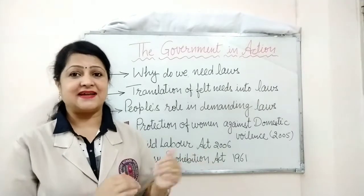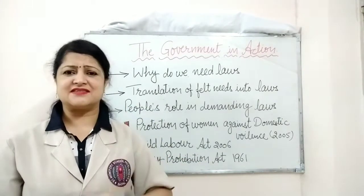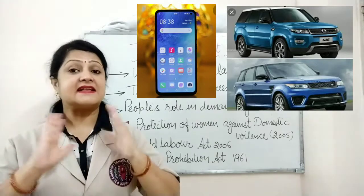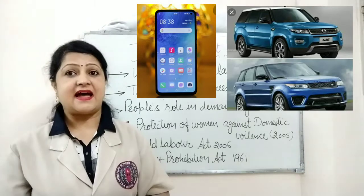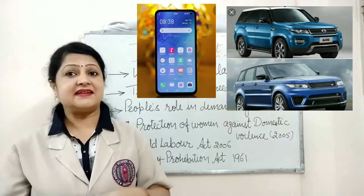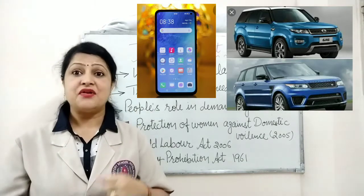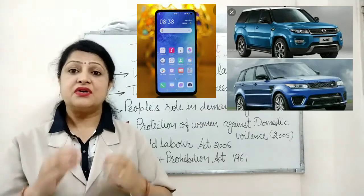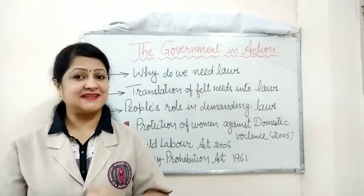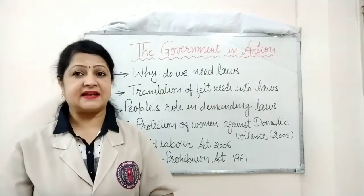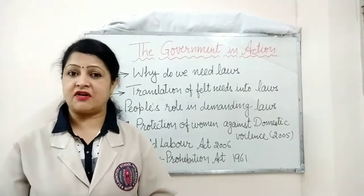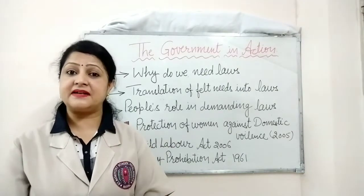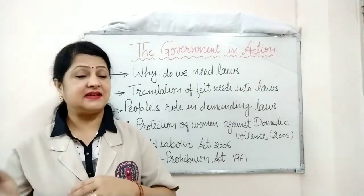Laws have to be changed according to the changing needs and time as society develops. The social order changes with time. Imagine 50 to 60 years back — there were hardly any cars or mobile phones. As time went by, technology completely changed the situation; today traffic density is very high and the Indian economy is one of the biggest markets for mobile phones in the world. New laws and rules have to evolve to manage road space and the communication system.